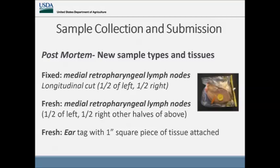Another new requirement is submitting an ear tag with a one-inch square piece of fresh tissue attached. This is critical because there have been situations where we needed to genetically match a submitted positive sample with the ID to confirm identification. If we don't have fresh tissue with an official ID attached, this becomes difficult or impossible. Also, for new index herds, the program will pay for genetic testing to confirm the animal's identity — but only if we have the official ID with fresh tissue.